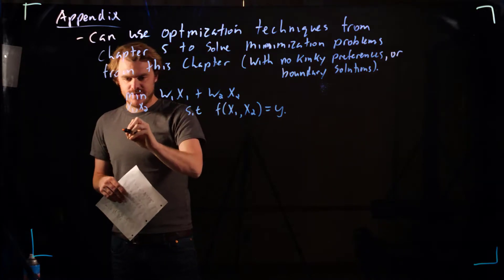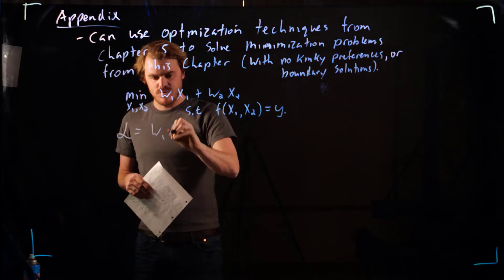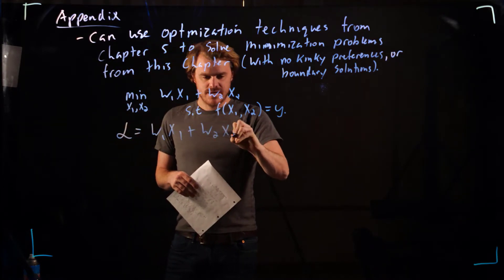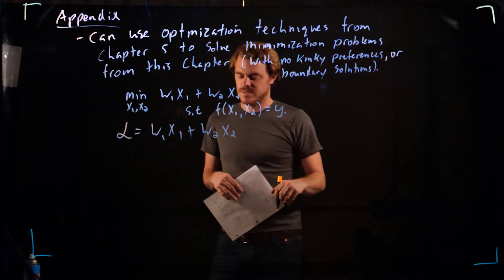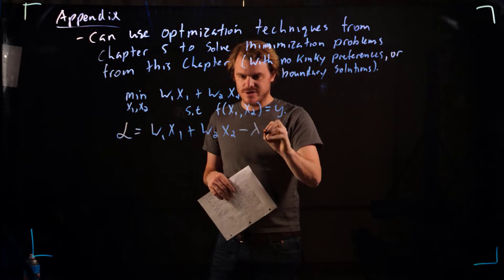But we can come up, so one of the methods we've learned about is this Lagrangian method: w1 x1 plus w2 x2 minus lambda, remember that Lagrangian multiplier.